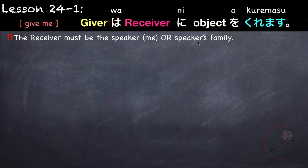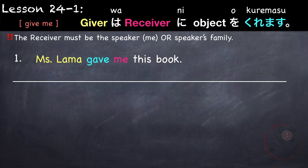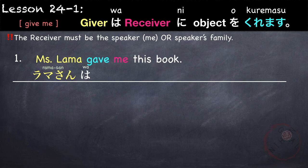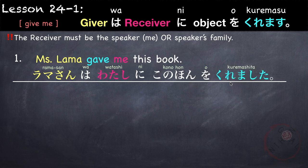For example, Miss Lama gave me this book. The giver is Miss Lama and the receiver is me, the speaker. Following the pattern: Rama-san wa, watashi ni, kono hon o, kuremashita — because it is in past form.